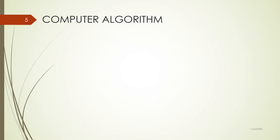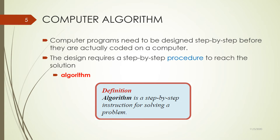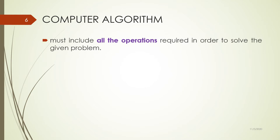Likewise, when you write a program, you have to have a very detailed instruction to give to the computer. That detailed instruction is what we call an algorithm. An algorithm is a step-by-step instruction for solving a problem.